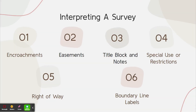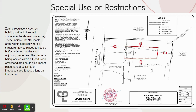Next are special use and restrictions. Zoning regulations such as building setback lines will sometimes be shown on the survey. These indicate the buildable area within a parcel where a structure may be placed to keep a buffer between buildings on adjoining properties. The property being located within a flood zone or wetland area could also impact placement of buildings or introduce specific restrictions on the parcel.